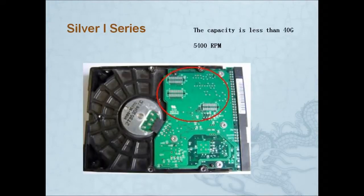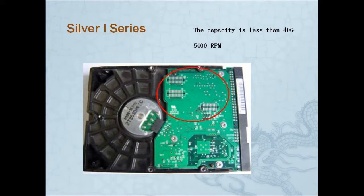Now let's look at the Silver 1 series. You can see the shape of Silver 1 on the picture — the layout of three dots is the mark used to identify Silver 1. However, Silver 1 is quite old, so we don't have that on the market right now. It's obsolete and phasing out.